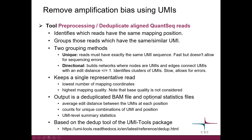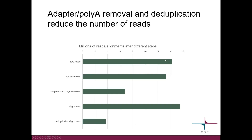The output is a deduplicated BAM file and an optional statistics file. This tool is based on the dedup tool of the UMI-tools package. In this example, starting with 14 million reads: after extracting UMIs and TATA, around 13 million remain; after removing adapters and poly-A, down to 6 million; after alignment, almost 16 million alignments are produced because one read can align to several places; and after deduplication, roughly 4 million alignments remain and are then counted.